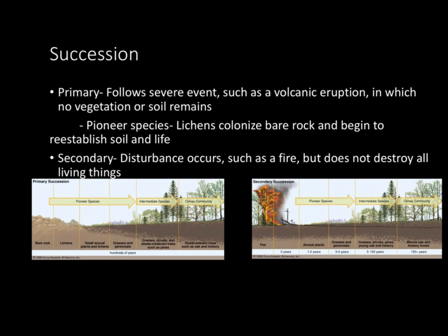Now let's look at succession. There are two types. Primary succession follows a severe event, such as a volcanic eruption, in which no vegetation or soil remains — it starts as just bare rock. Pioneer species is an important concept here — something such as a lichen that colonizes bare rock and begins to reestablish soil and life. It starts as bare rock and then progressively, over hundreds of years, trees and everything start to regrow and the forest comes back to normal.